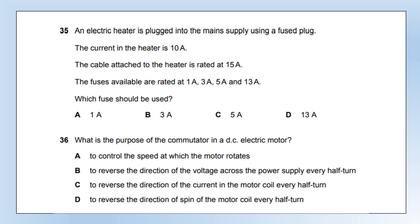An electric heater is plugged in using a fused plug. The current in the heater is 10 amps. The cable is rated at 15 amps. Available fuses are 1, 3, 5, and 13 amps. Which fuse should be used? If we used 1, 3, or 5 amps we could never power the heater as it draws 10 amps — the fuse would blow immediately. The 13-amp fuse allows 10 amps to flow without exceeding the 15-amp cable rating. So the answer is 13 amps.